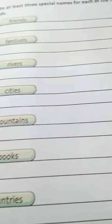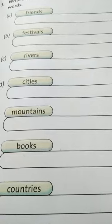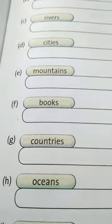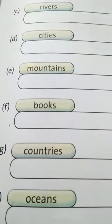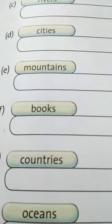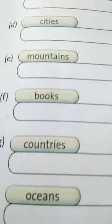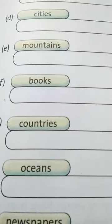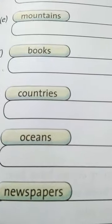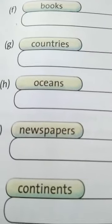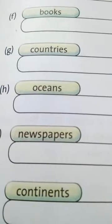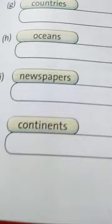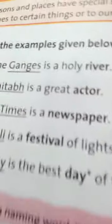Mumbai, Kolkata, or any three cities of your choice. Mountains, you have to write three mountains. Books - book names you have to write like Champak, Nandan. Countries - three countries you have to write. Oceans, you have to write three oceans. Newspapers, you have to write three newspapers name. Continent, you have to write three continents name.